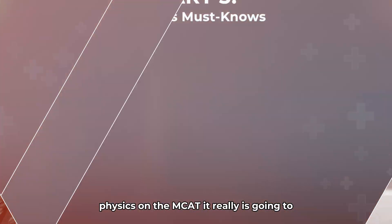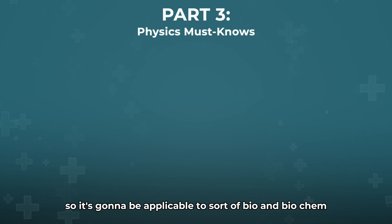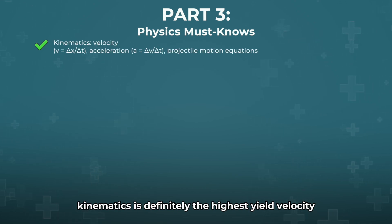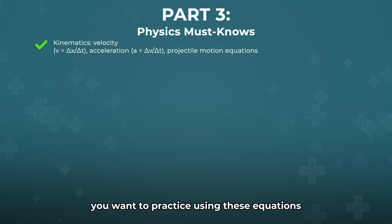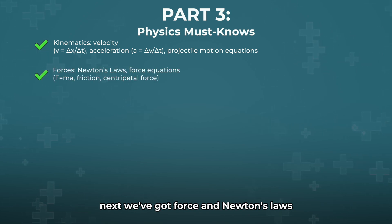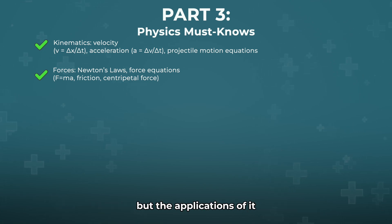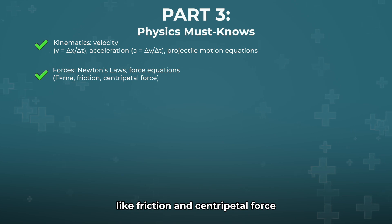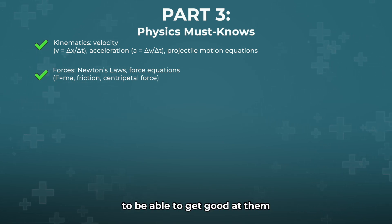Let's shift to physics. Physics on the MCAT will often integrate equations into biology-based scenarios, so it's going to be applicable to bio and biochem. Kinematics is definitely the highest yield — velocity, acceleration, and projectile motion. You want to practice using these equations to quickly solve problems. Next, we've got force and Newton's laws. F equals MA is pretty foundational, but the applications of it, like friction and centripetal force, really do require a bit more practice.